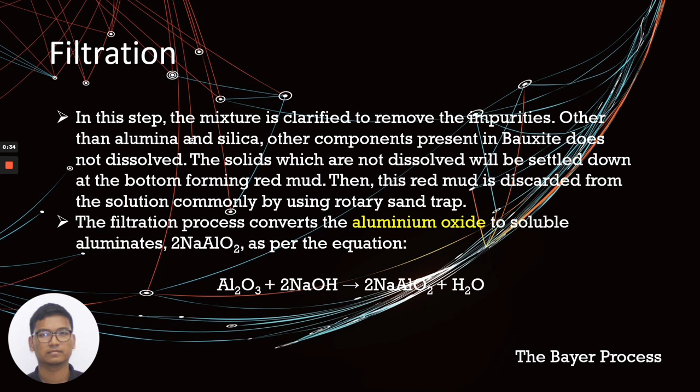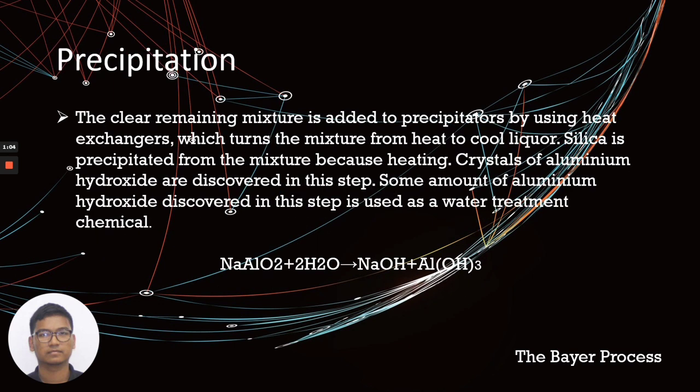The next step is filtration. In this step, the mixture is clarified to remove the impurities. Other alumina and silica compounds present in bauxite do not dissolve. The solids which are not dissolved will be settled down at the bottom forming red mud. Then this red mud is discarded from the solution, commonly by using rotary centrifuge. The filtration process converts the aluminum oxide to soluble aluminates.